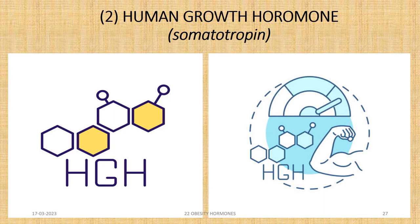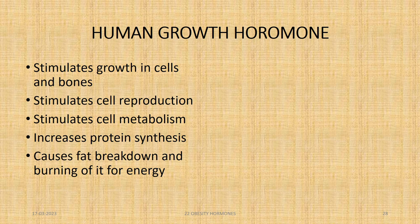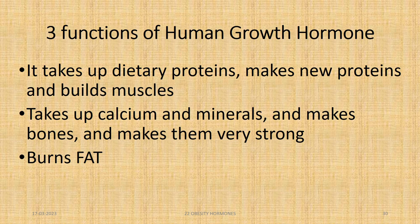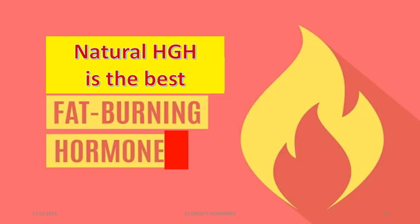The second most important hormone associated with obesity is human growth hormone, known as somatotropin. It stimulates growth in cells and bones, stimulates cell reproduction and cell metabolism, increases protein synthesis, and causes fat breakdown and burning for energy. Human growth hormone also increases calcium retention, builds muscles and stronger bones, stimulates brain-derived neurotrophic factors (BDNF), preserves protein in the body, and stimulates the immune system. Natural human growth hormone is the best fat-burning hormone we have in our body.